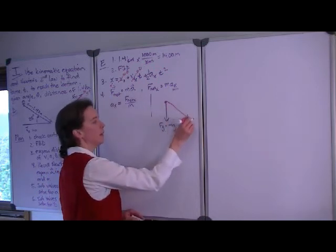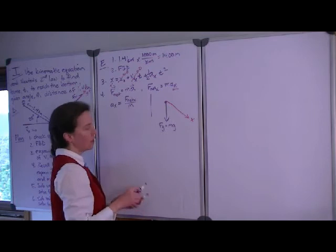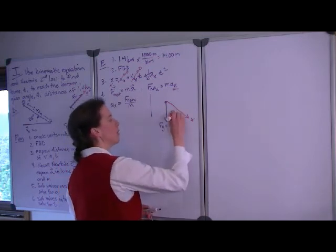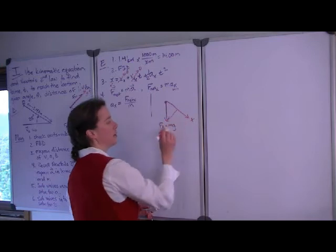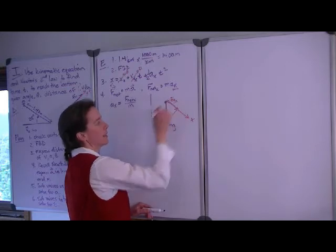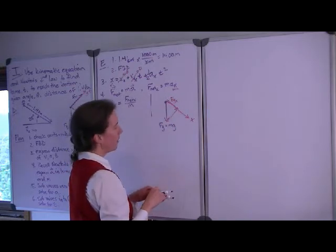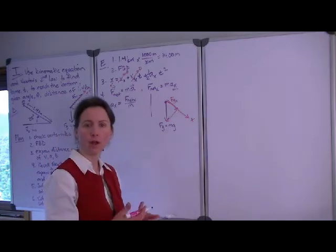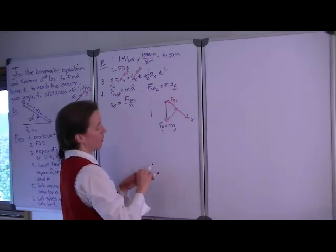We have our weight force equal to the mass times the gravitational acceleration. The x direction, remember, is this way. So this weight force is comprised of two components. A component perpendicular to the x direction and a component parallel. So we can call this fg x.